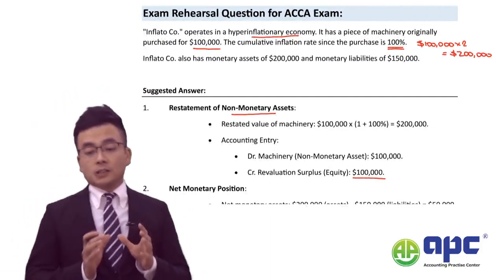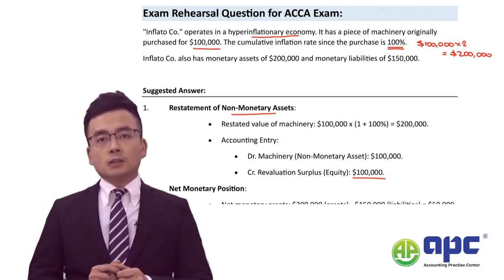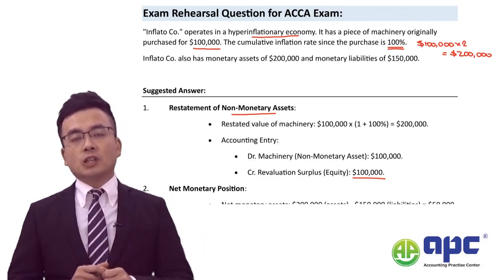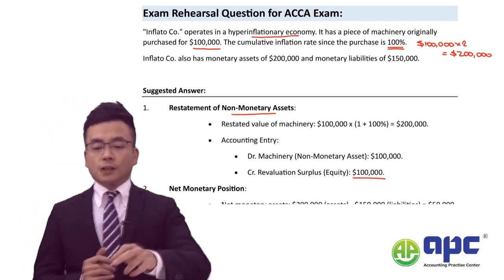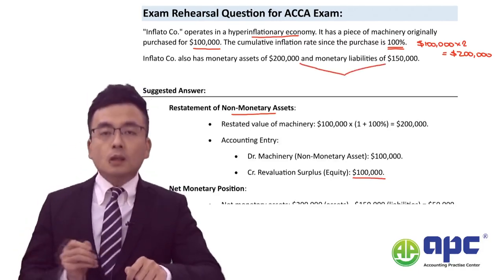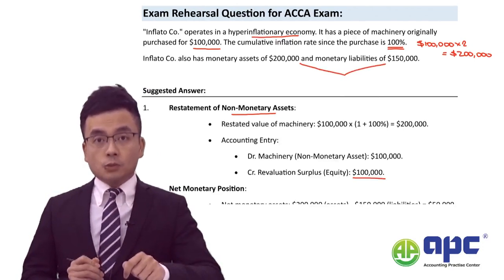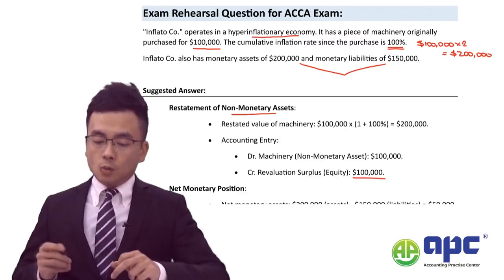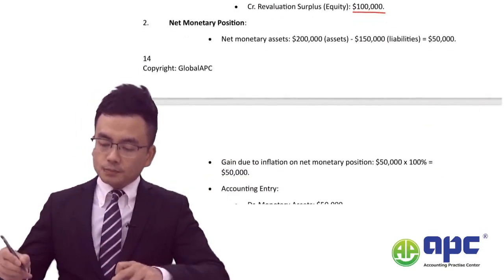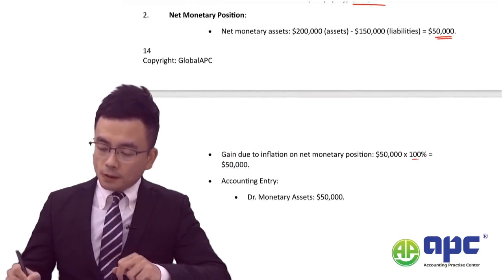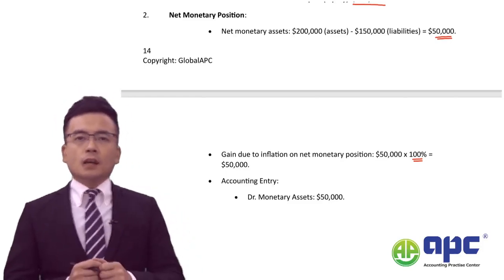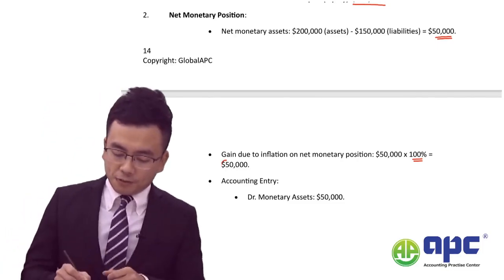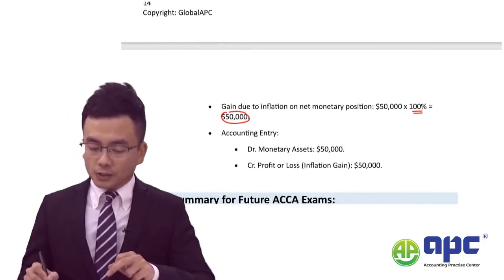The company also has monetary assets worth $200,000 deposited in the hyperinflationary economy's bank account, and monetary liabilities worth $150,000. According to IFRIC, we need to take the net figure — assets minus liabilities — which is $50,000, and apply the 100% inflation rate. This means the money is worth less by $50,000, and that $50,000 needs to be put into the P&L directly.